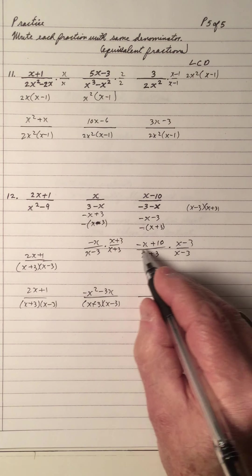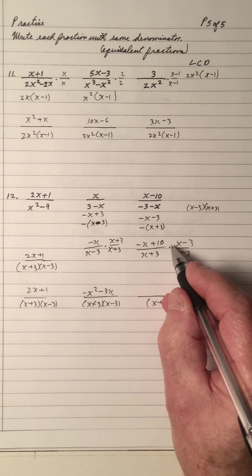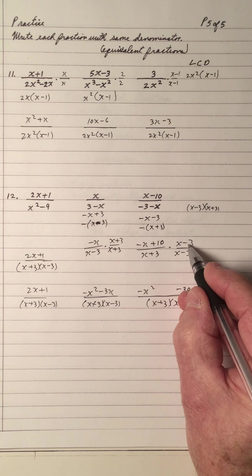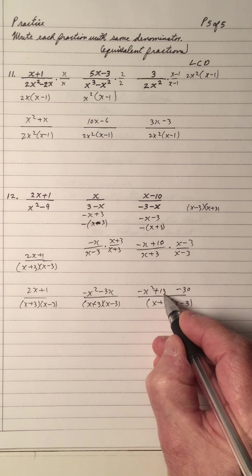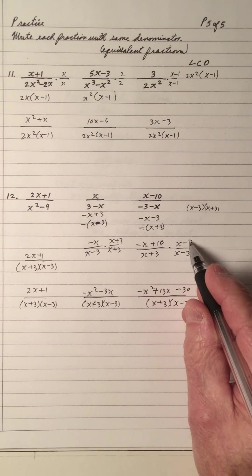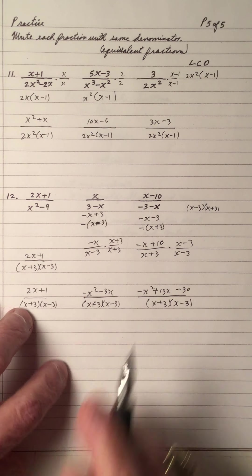Now multiply. x times x is negative x squared; 10 times negative 3 is negative 30; outside is 3x; inside is 10x — so that's 13x. If you want to do foil, do it on a sheet of scrap paper and then write this answer down — it makes it faster.